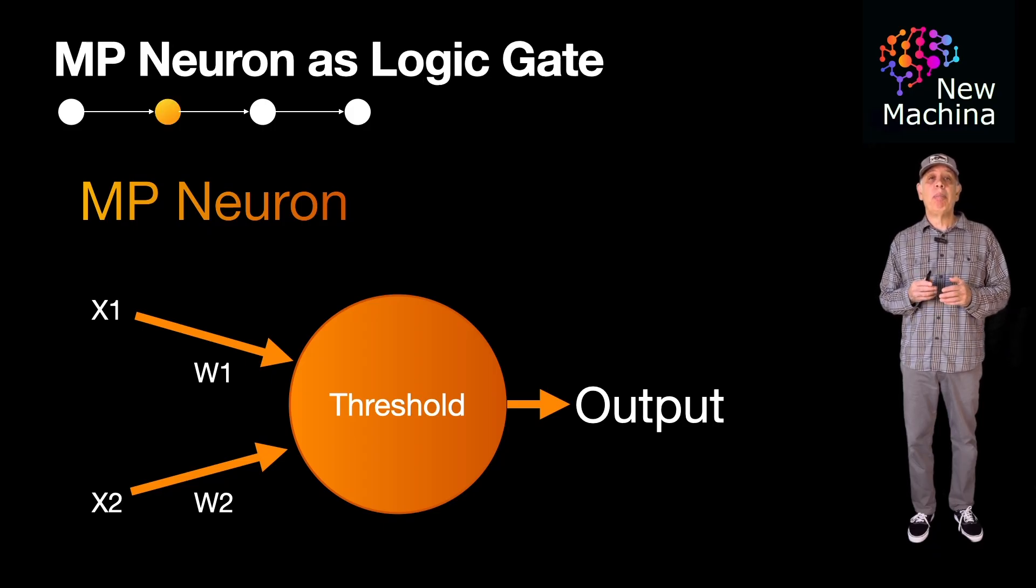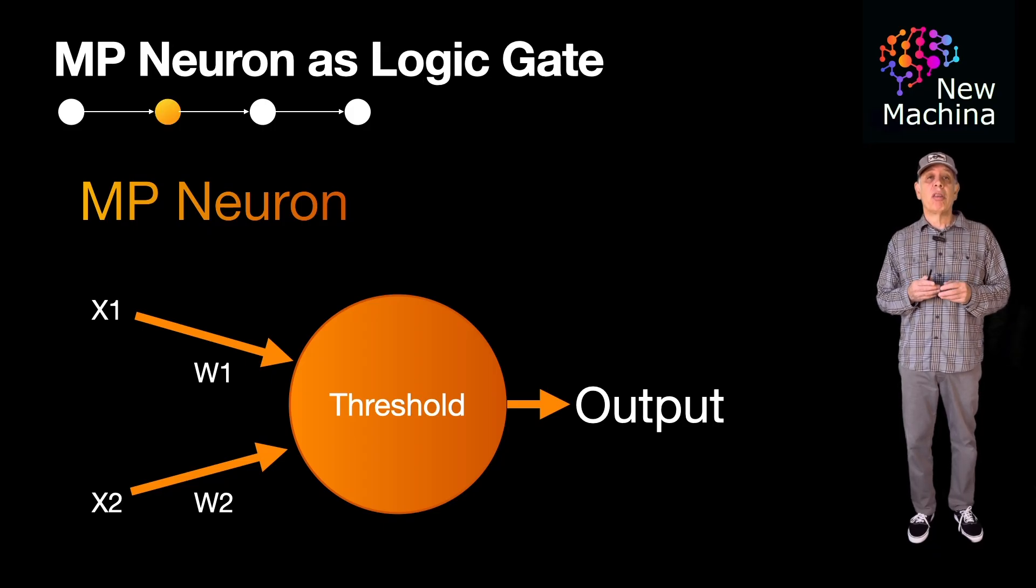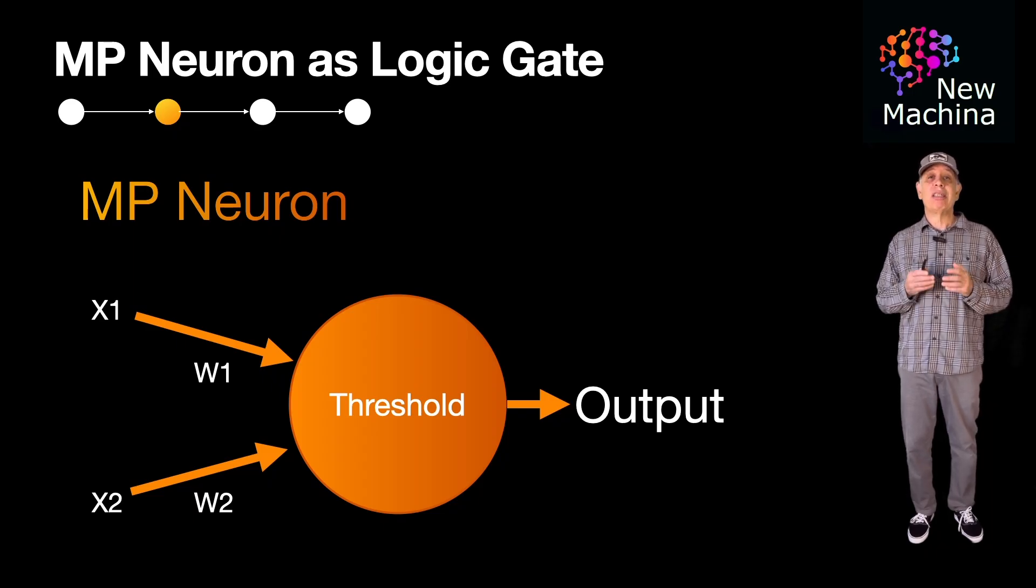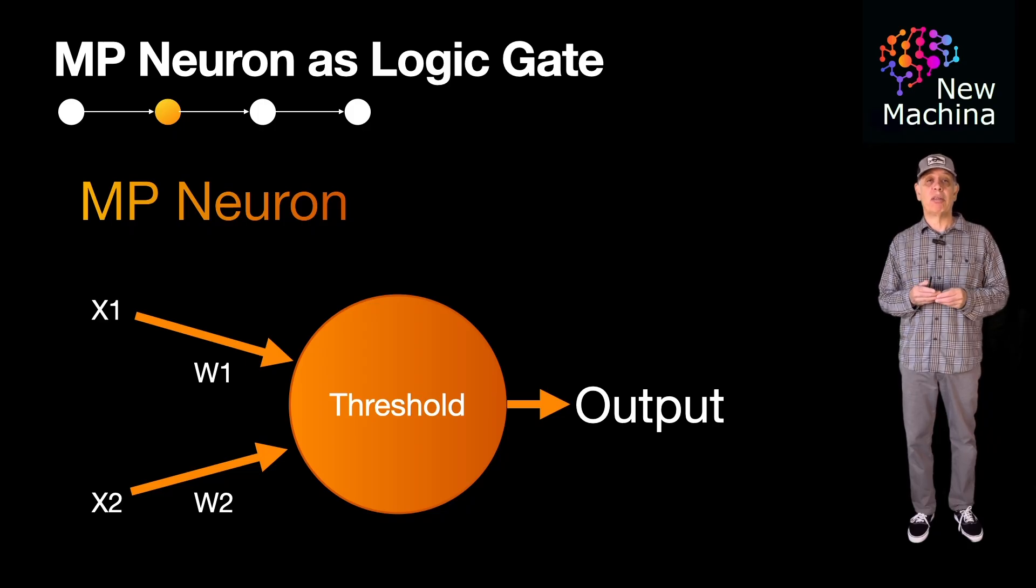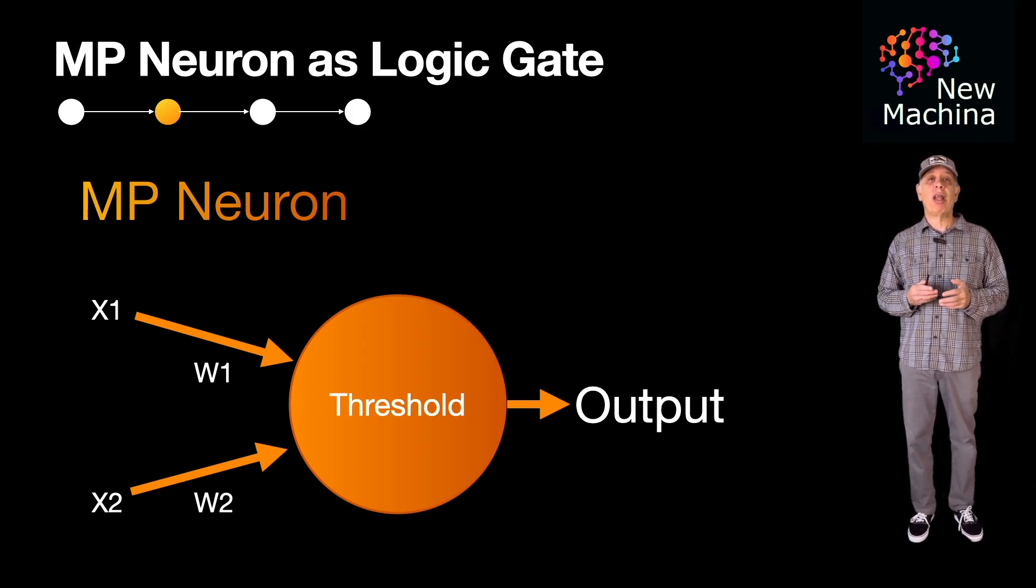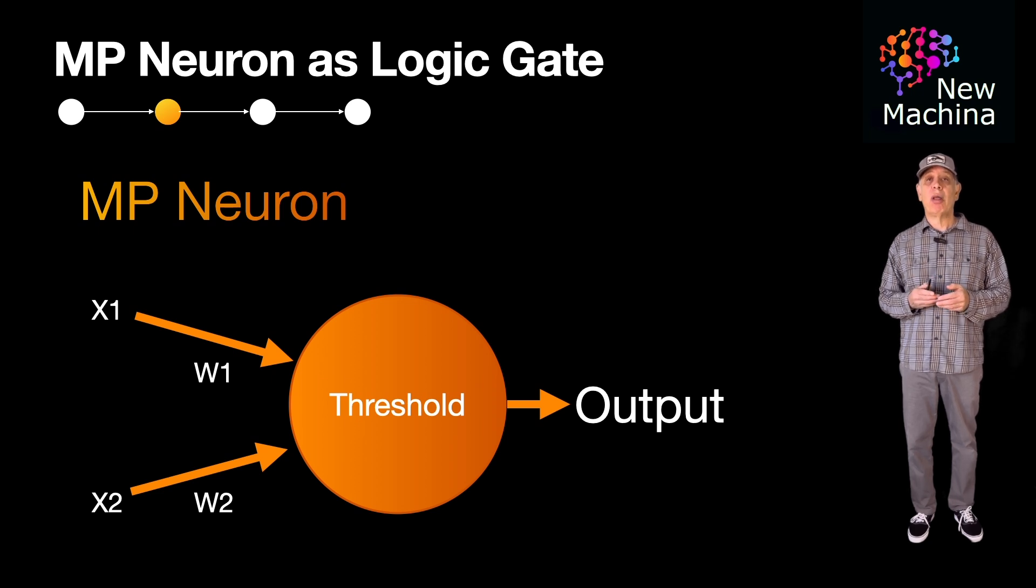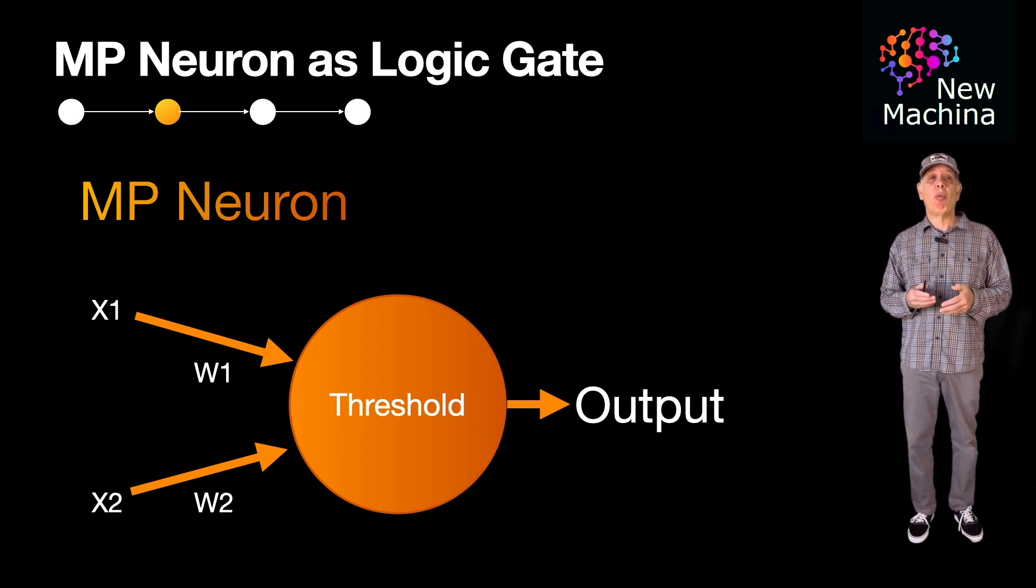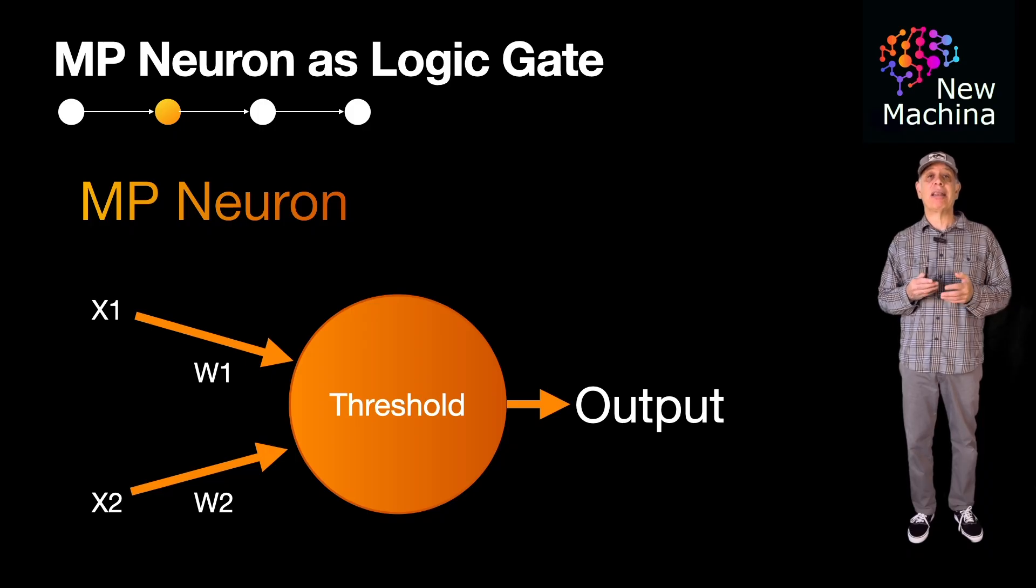So what are the MP Neuron's limitations? The first one is there is no learning algorithm. The MP Neuron does not have a mechanism for learning or adapting its weights. The weights and threshold are fixed. The second is linear separability. It can only solve linearly separable problems, meaning that it can't handle more complex tasks like the XOR problem.